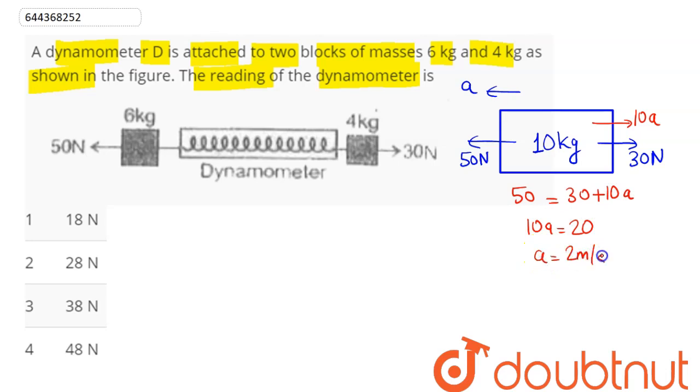Now if we draw the FBD for 6 kg and 4 kg and draw all the forces acting on them: Here is 50 Newton, acceleration is to the left of magnitude 2. As well as for the 4 kg block, acceleration is also to the left of magnitude 2. Here there is 30 Newton.